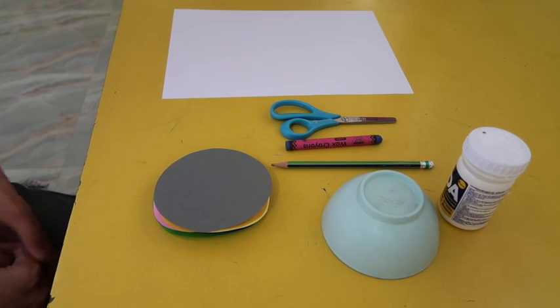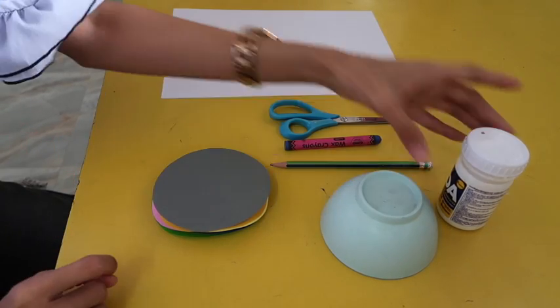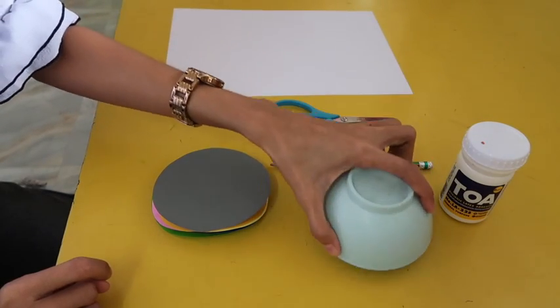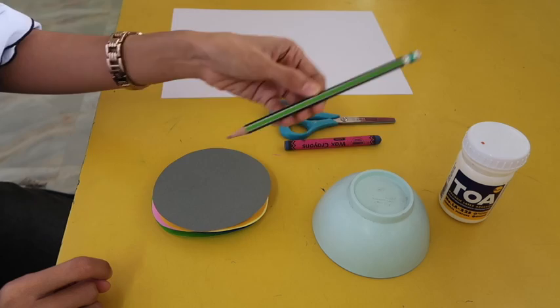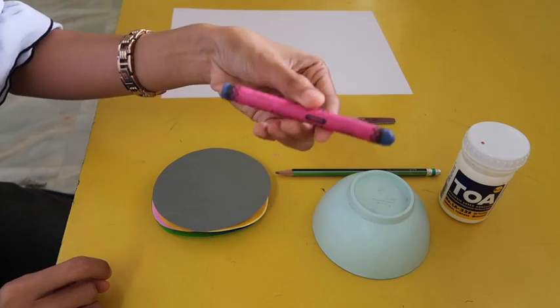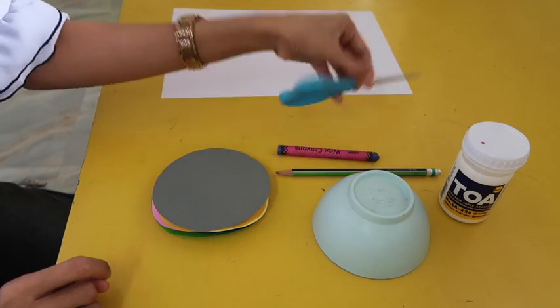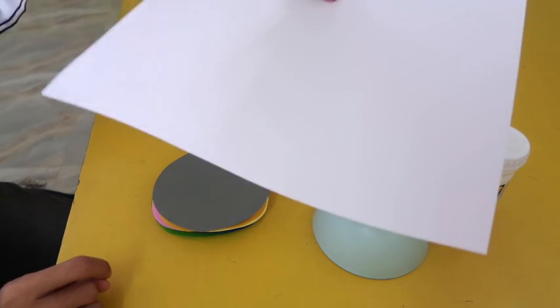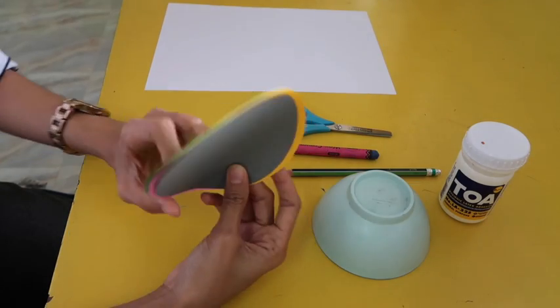For today's art, these are the materials that we need. First, we have glue, small bowl, pencil, a blue crayon, scissors, our bond paper, and also, our colored papers.